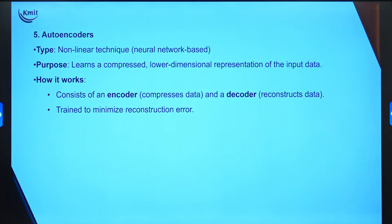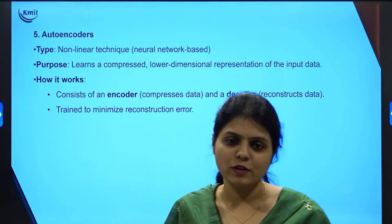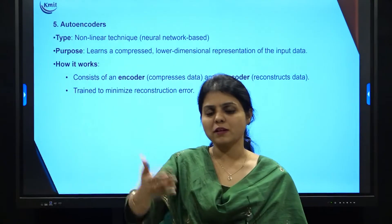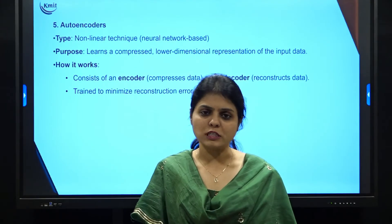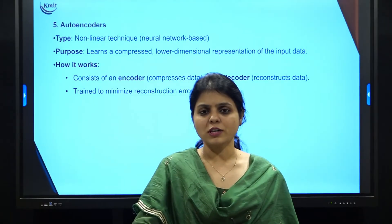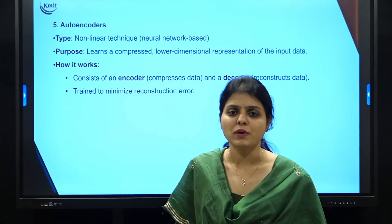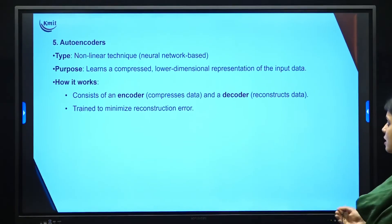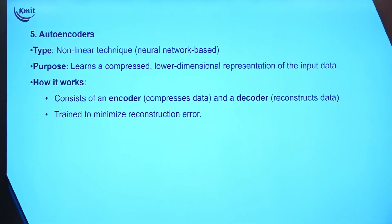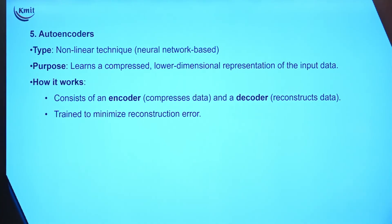The fifth technique is autoencoders, which are also non-linear but are neural-network-based. When we talk about advanced machine learning — that is, deep learning — we make use of autoencoders. We do not typically use autoencoders in conventional machine learning, but in deep learning for dimensionality reduction we do. An encoder compresses the data into a lower-dimensional representation, and a decoder reconstructs the data — this encoder-decoder architecture is what autoencoders are.